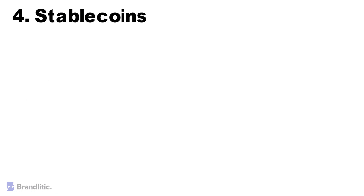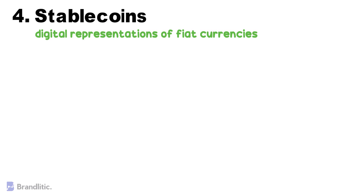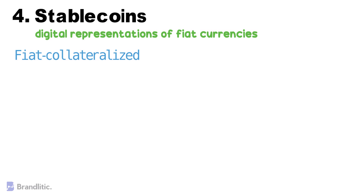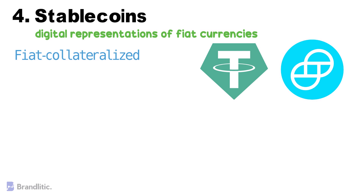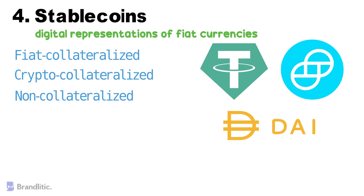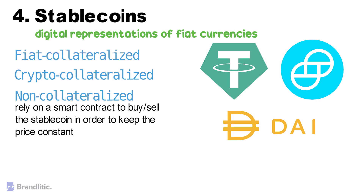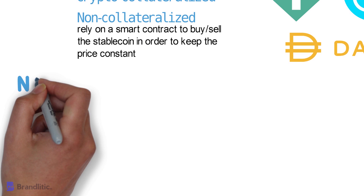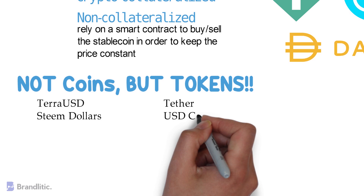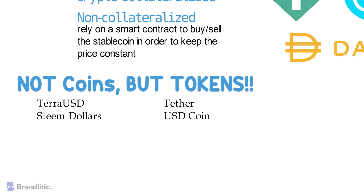Number four: Stablecoins — digital representations of fiat currencies. They fall into one of three groups. First, Fiat Collateralized: backed by fiat currency — examples are Tether and Gemini Dollar. Second, Crypto Collateralized: backed by another cryptocurrency — an example is DAI. Third, Non-Collateralized Stablecoins: these rely on smart contracts to buy and sell the stablecoin in order to keep their price constant. Interestingly, several stablecoins are not actually coins but tokens. Two examples of actual stablecoins are TerraUSD and Slim Dollar, while two examples of stable tokens are Tether and USD Coin, as both are ERC-20 tokens on the Ethereum blockchain.